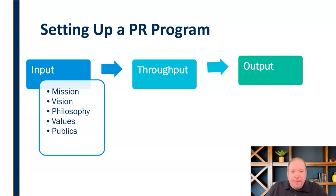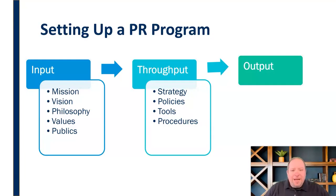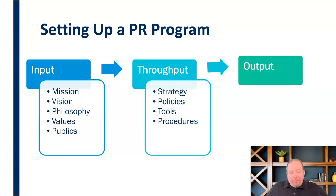Once we gather all that input information, we can start looking at throughput — how do we use all that information and how does it impact what we're doing? Here we're creating things like strategy, policies, tools, and procedures. What's our strategy going to be? What's our social media tone and voice? What's our strategy for reaching and connecting with media? How much media exposure do we want — or do we want to stay under the radar? Do we have proprietary information we need to protect? All of this shapes our public relations and media relations strategy.